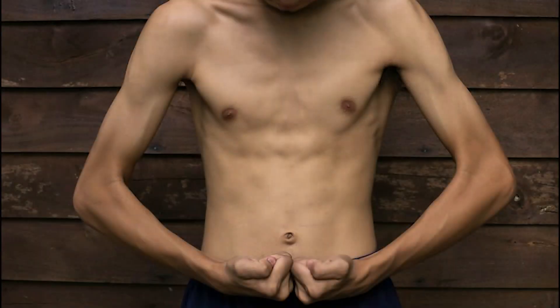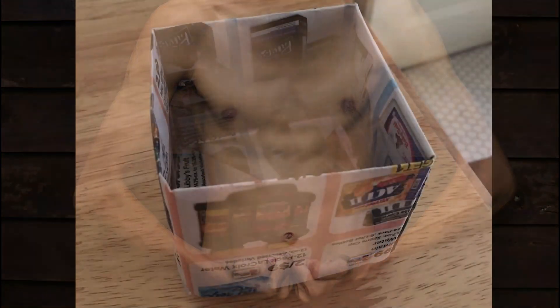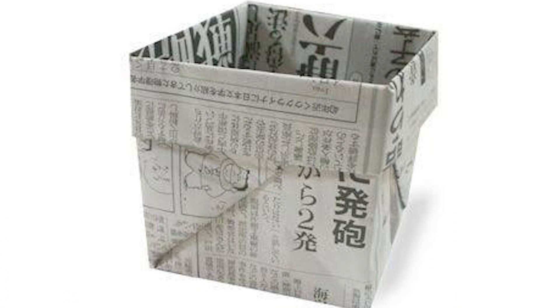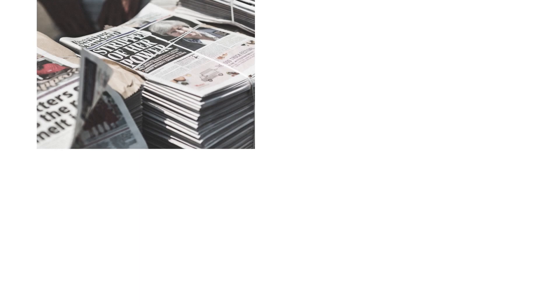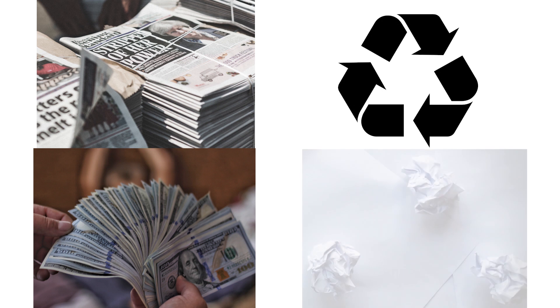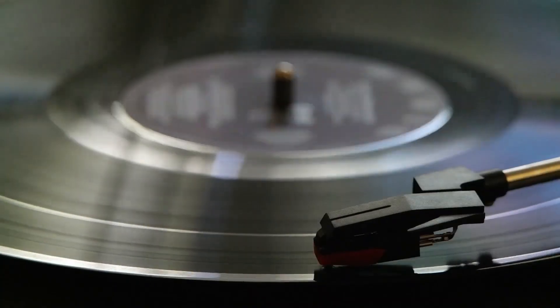A product is not sustainable if its physical properties are not up to the task it is designed for. For example, suppose I want to make a coffee cup and I choose newspaper as the material. Newspaper is abundant, recyclable, cheap, and has low embodied energy — but I can't use it because if I pour coffee into a newspaper cup, the product fails. And that is exactly what we will look at next. So until then, stay safe and stay tuned.